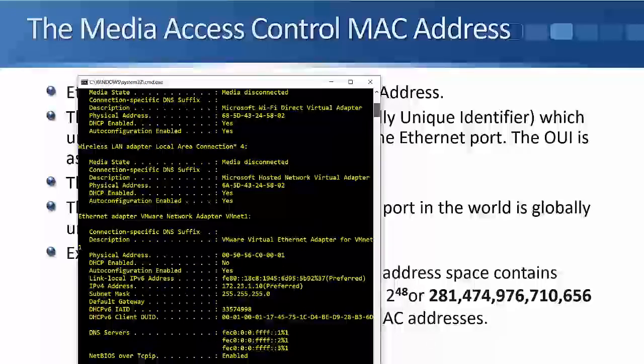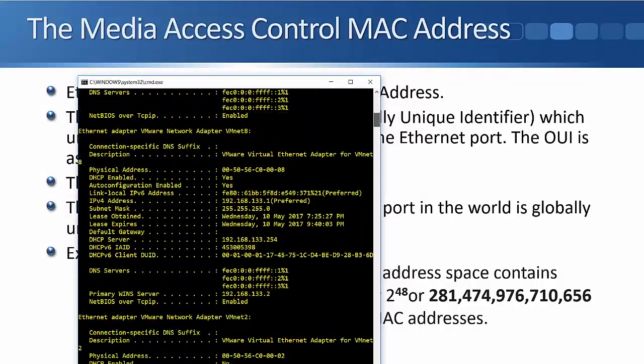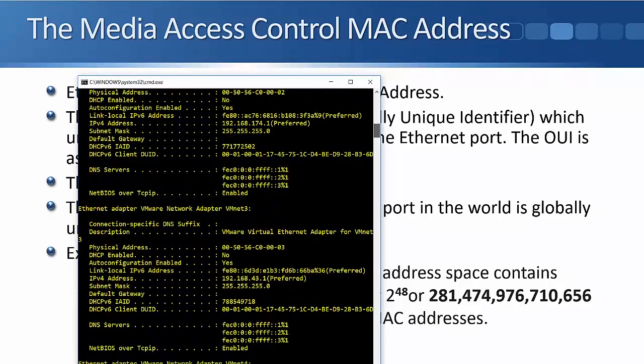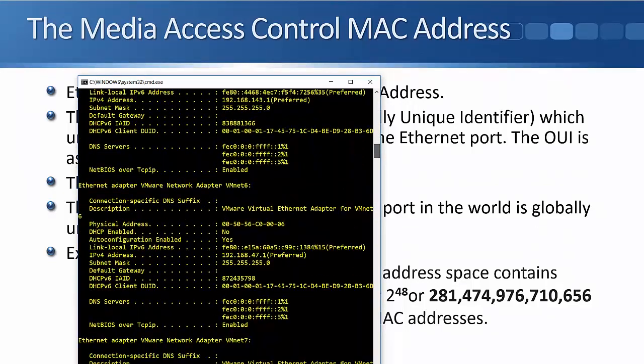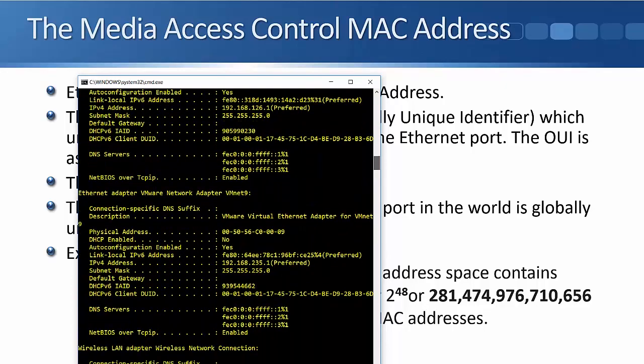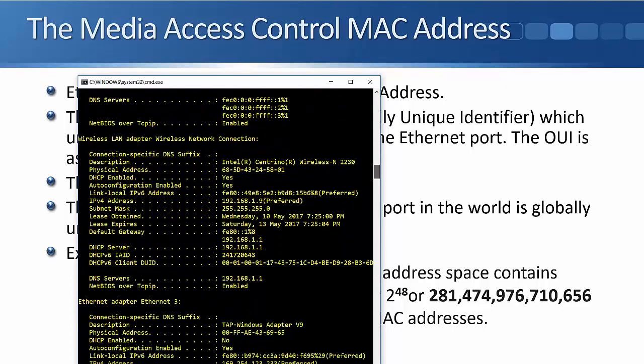If I scroll back and then find my wireless adapter, which is going to be in this list somewhere, let me just keep scrolling through until I find it. Okay, here it is. My wireless network adapter, because I'm on wireless now. Both wireless and wired Ethernet both use a MAC address. The entry here, Physical Address, that is the MAC address. So my MAC address on my laptop is 685D43245801.